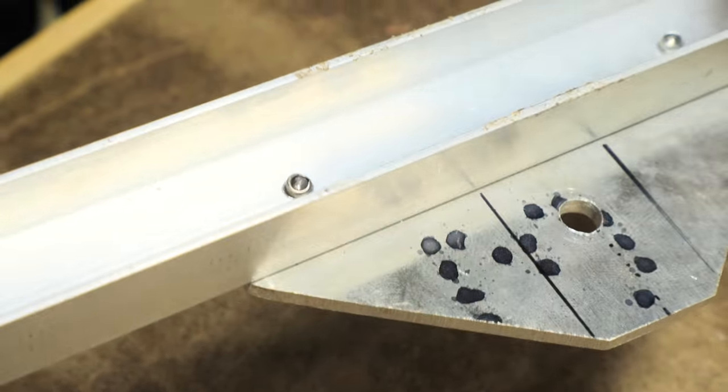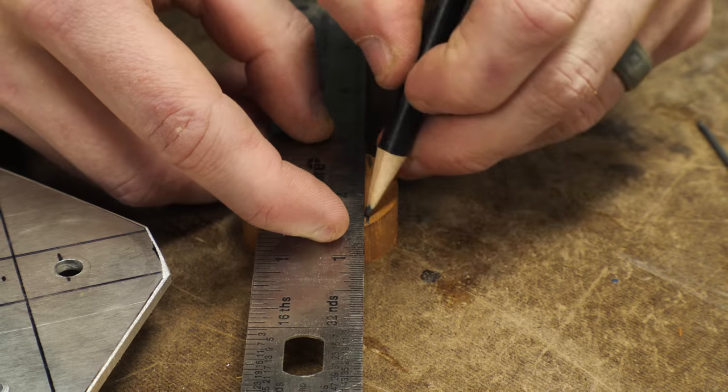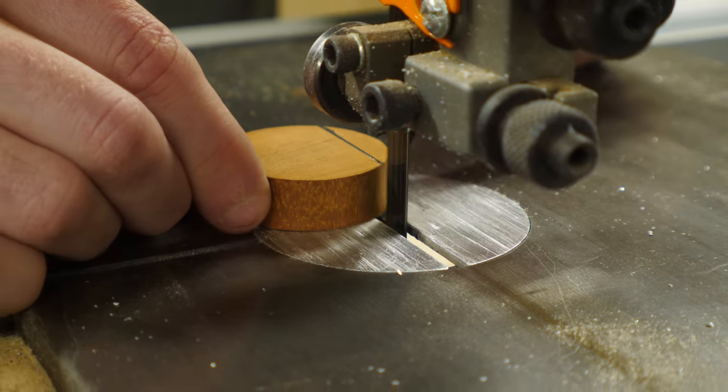Remember that little circle of wood I cut off earlier? That's going to act as a foot underneath the bottom of this plate. I held it in place and marked where I needed to flatten one side so it could fit right up against the U-channel.